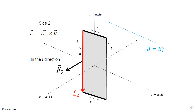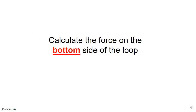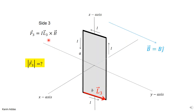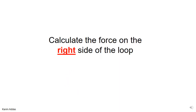For the bottom side of the loop, the vector L3 starts at the beginning of that segment and ends at the end, pointing in the plus Y direction — exactly the same direction as the magnetic field. The angle between them is zero, so the magnitude of the force is I·B·sin(0°) = 0. There is zero force on the bottom side.